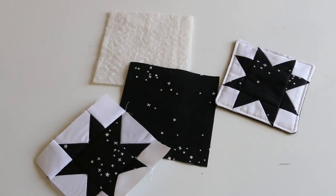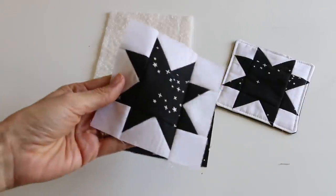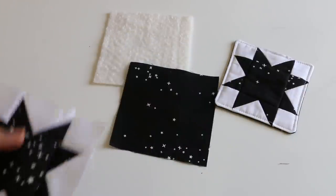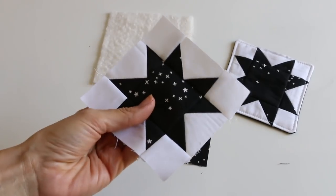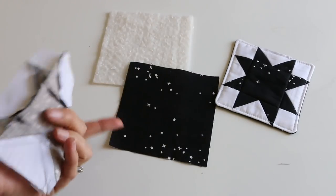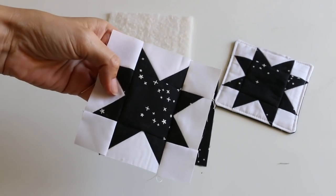All right, so if you have an orphan block laying around or if you just love the way these look and want to make one, I'm going to show you how. So first you need your top—it could be a solid piece of fabric or you could make a cute little star like this.